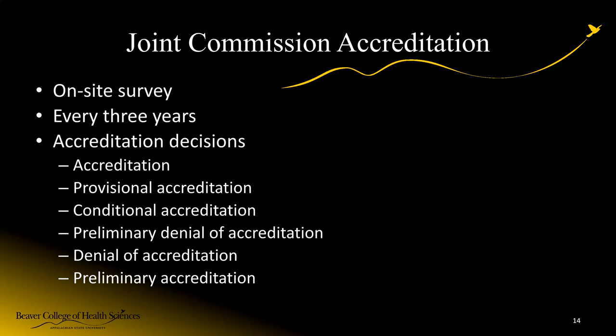The Joint Commission can offer different levels of accreditation: full accreditation if everything is fine; provisional accreditation if you're new; conditional accreditation if they have some concerns and ask you to fix them; preliminary denial if those concerns are broader and you have to contest it; and full denial of accreditation, which is really unfortunate because it's very difficult to come back from — you can't really stay open. There's also preliminary accreditation for completely new organizations that have yet to establish processes.